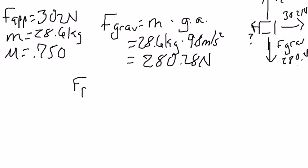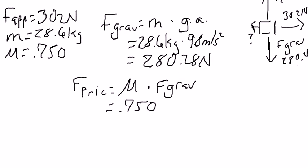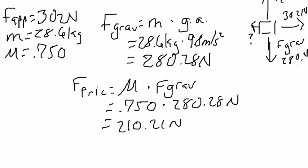The formula we're going to use is: the force of friction equals the friction coefficient times the force of gravity we just calculated. We plug in the friction coefficient 0.750 and multiply it by 280.28 newtons. When you multiply those together, you should get 210.21 newtons — and this is our friction force. It's 210.21 newtons.